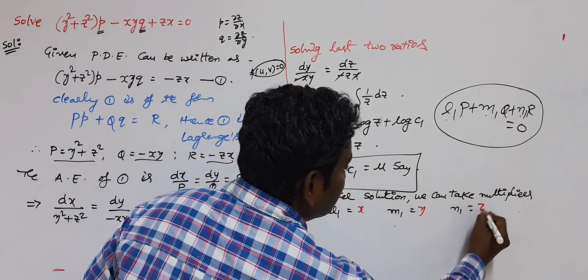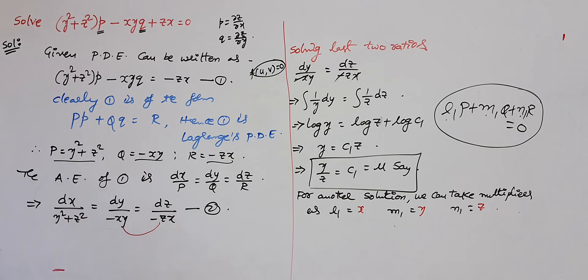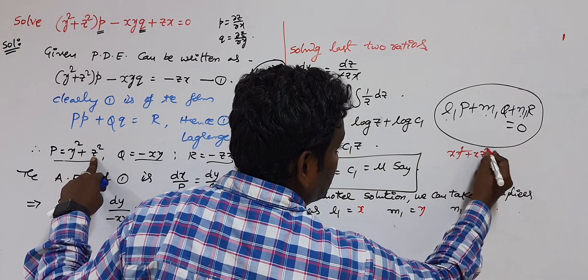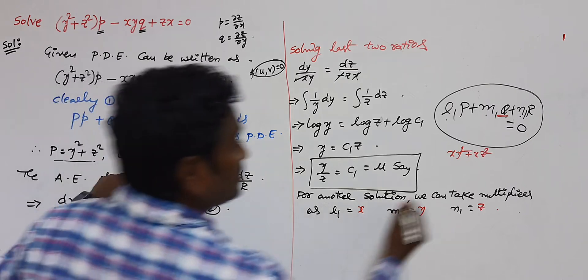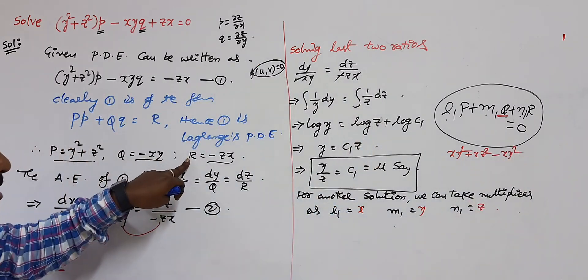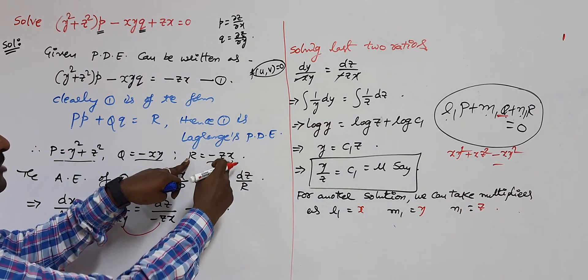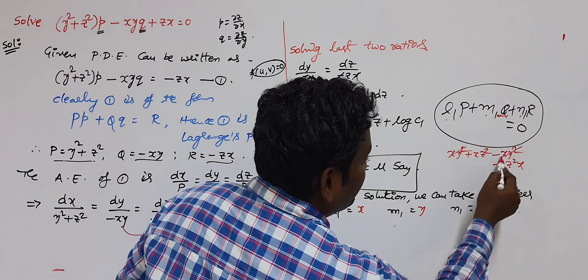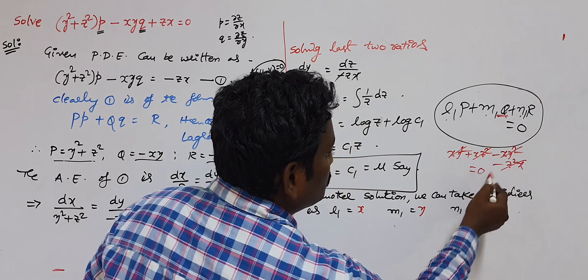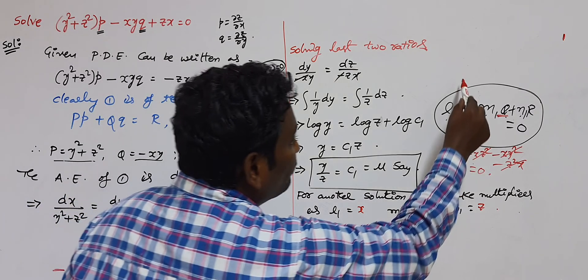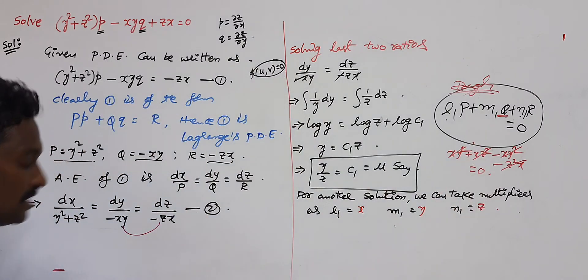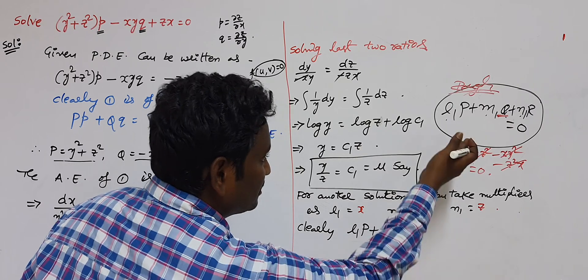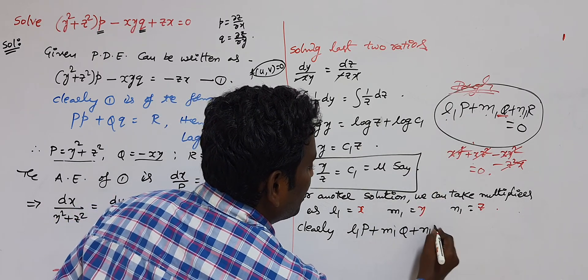Checking in rough: x·(y² + z²) + y·(−xy) + z·(−zx) = xy² + xz² − xy² − xz² = 0. The combination is indeed 0. Do not put this rough work in your solution. So L₁P + M₁Q + N₁R = 0 is confirmed.